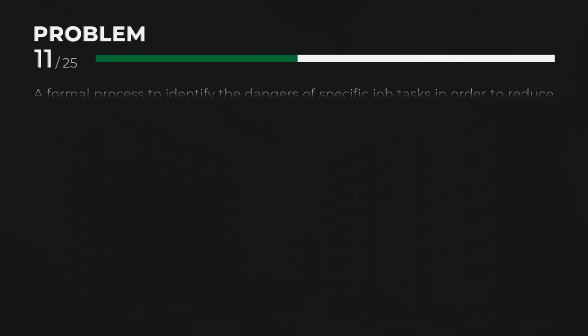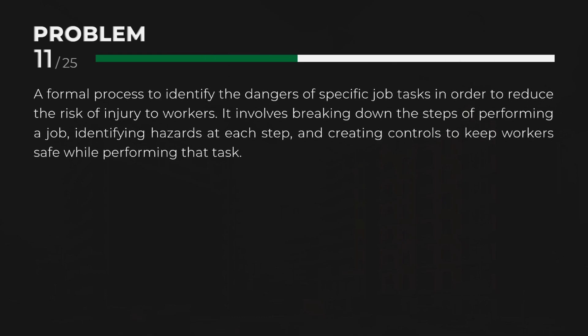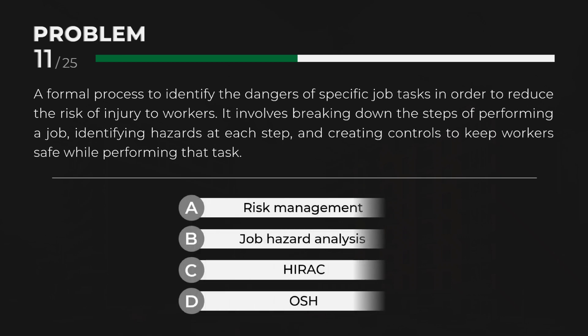A formal process to identify the dangers of specific job tasks in order to reduce the risk of injury to workers. It involves breaking down the steps of performing a job, identifying hazards at each step, and creating controls to keep workers safe while performing that task. Answer: B. Job hazard analysis.